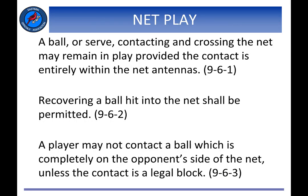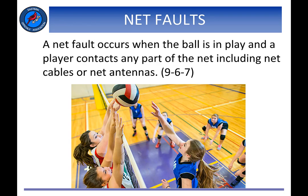Rule 9-6 clarifies net play by stating that the ball has to pass between the antennas without contacting either one in order to remain in play. A ball hit into the net may be recovered provided the team still has allowable hits remaining. Only when executing a legal block may contact be made with a ball that is still entirely on the opponent's side of the net. A net fault occurs when the ball is in play and a player contacts any part of the net, including net cables or net antennas. Net faults can also be called when, in the referee's judgment, a player contacts an opponent and interferes with the opponent's legitimate effort to play the ball, or gains an advantage by contacting any cables, standards, or the referee's platform.